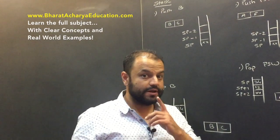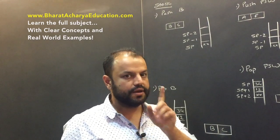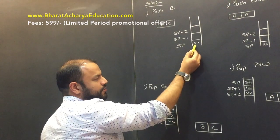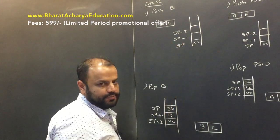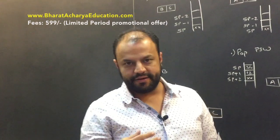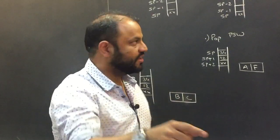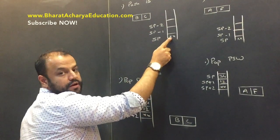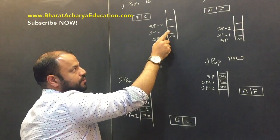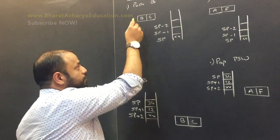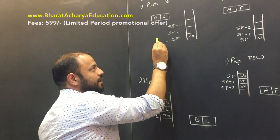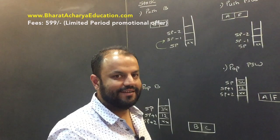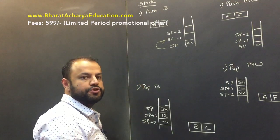Where will B go — to SP-1? SP register provides that address. If you directly push B, it would go to the current SP location, but you want it at SP-1. Which means before B goes into the stack, the first step is SP will become SP-1. This is the first step of the execution of the push instruction.